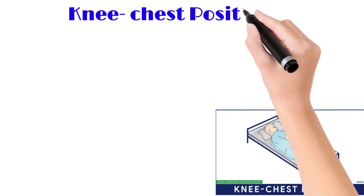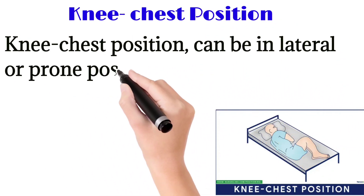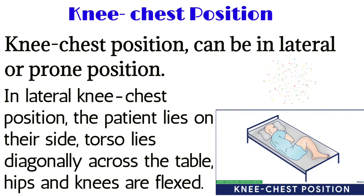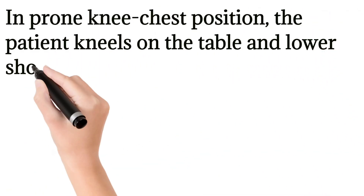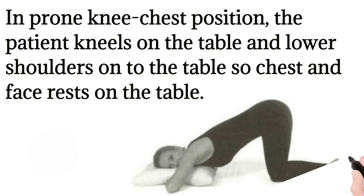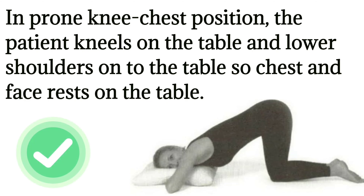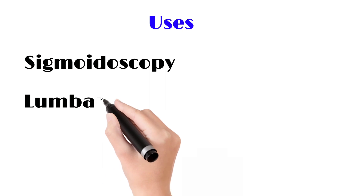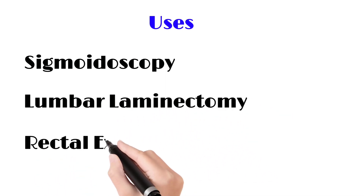Next is the knee-chest position, which is of two types — lateral and prone. In the lateral knee-chest position, the patient lies on their side with hips and knees flexed toward the chest. In the prone knee-chest position, the patient kneels on the table and lowers the shoulder so the chest and face rest on the table, elevating the abdomen so the rectum is clearly visualized. Uses include sigmoidoscopy, lumbar laminectomy, and rectal examination.